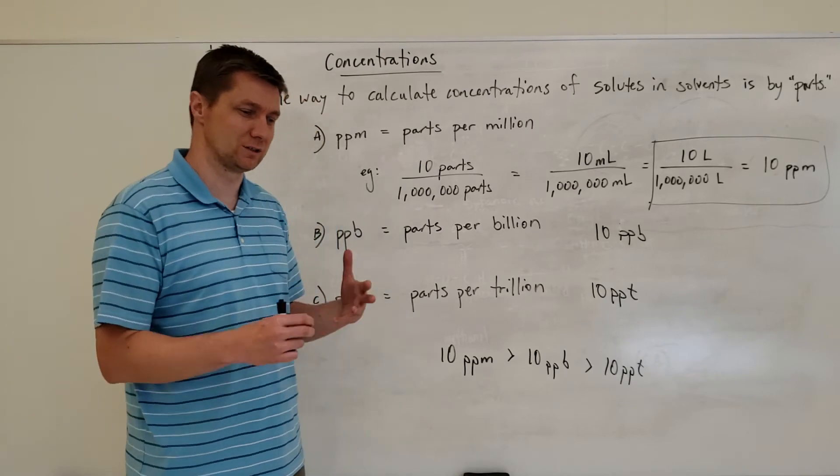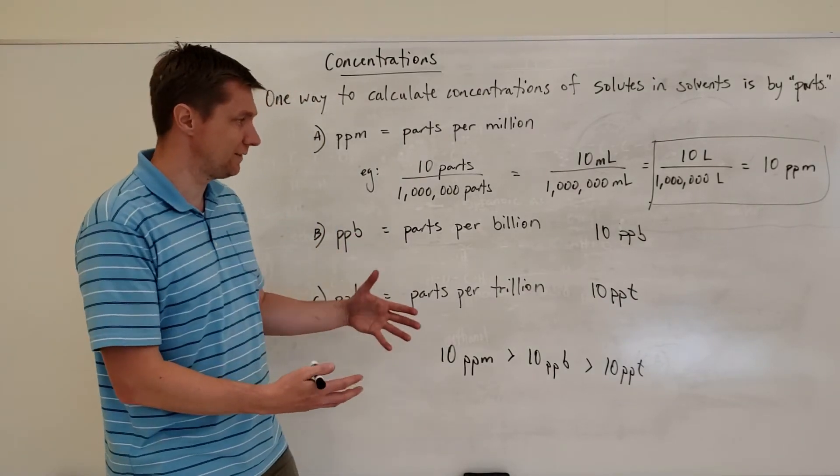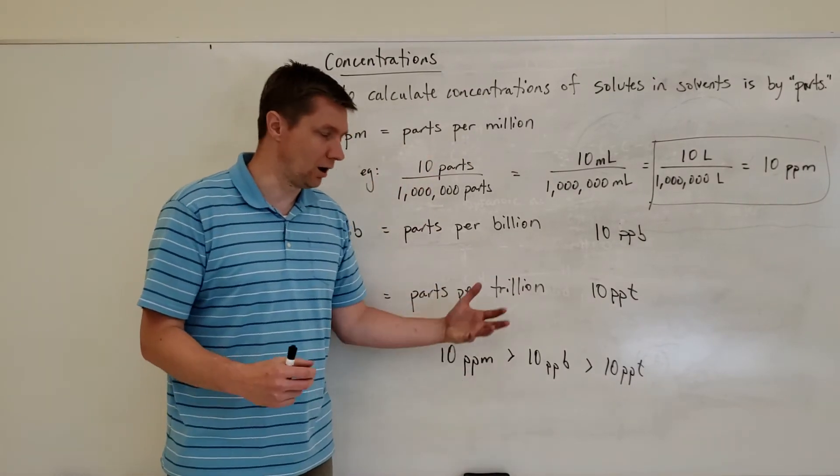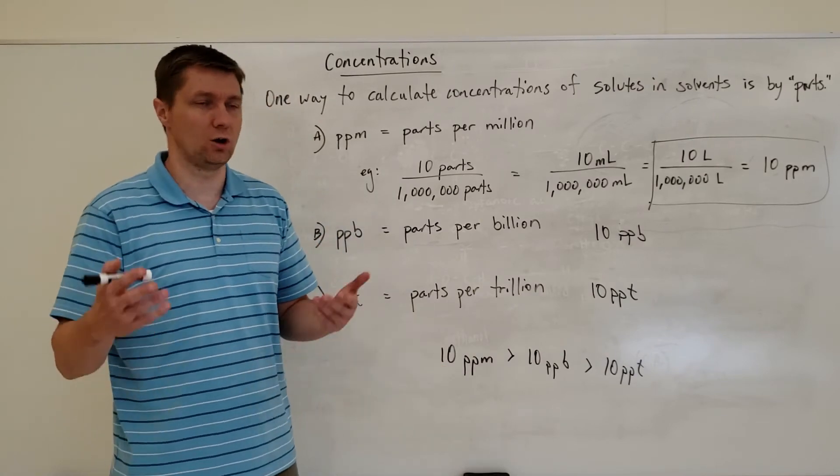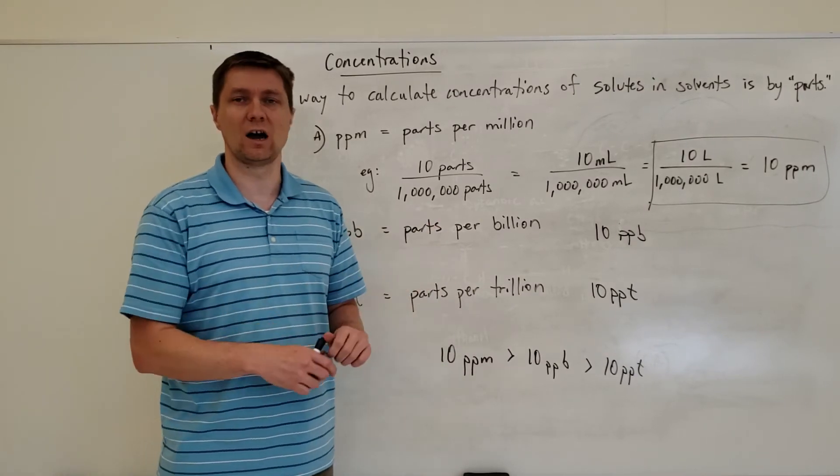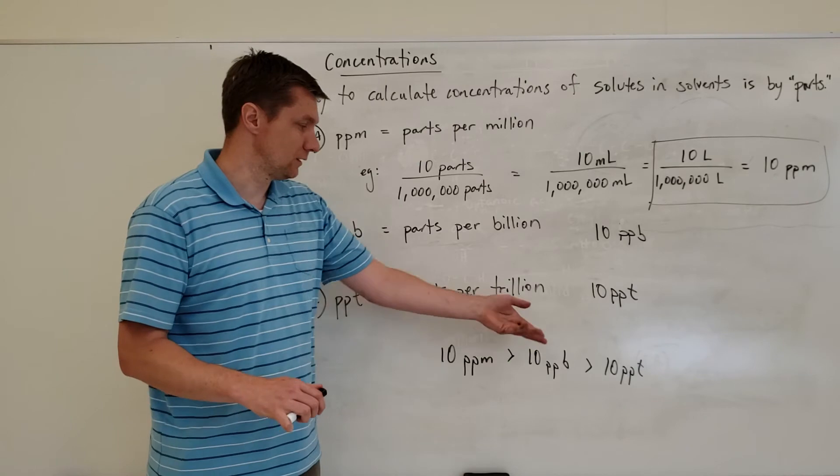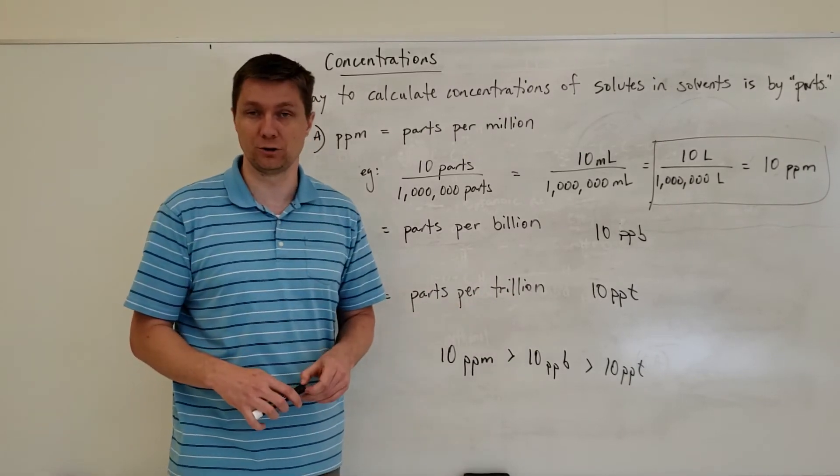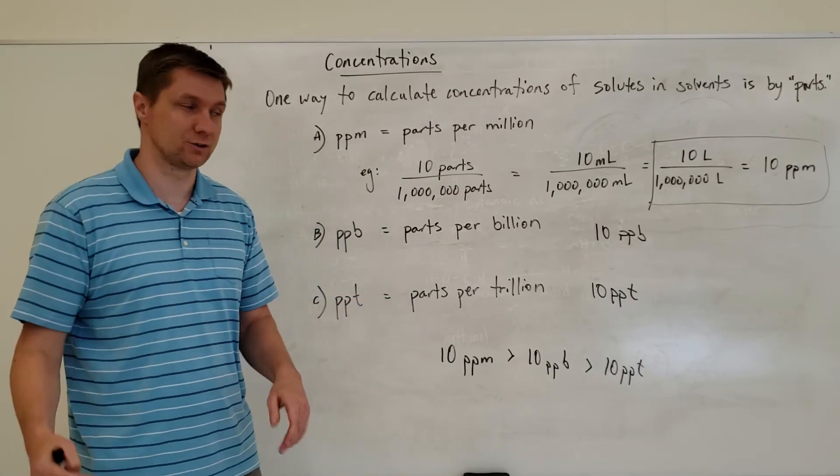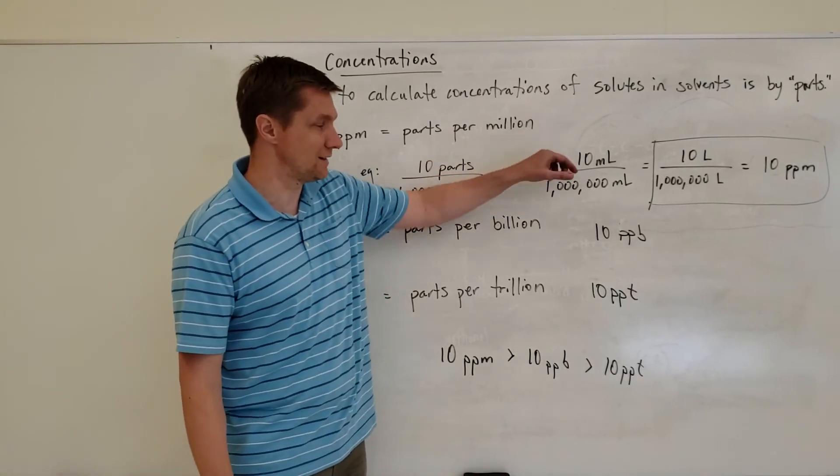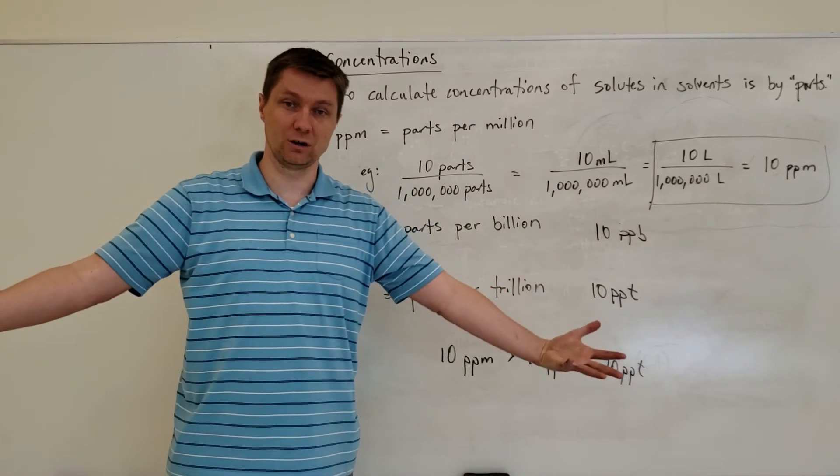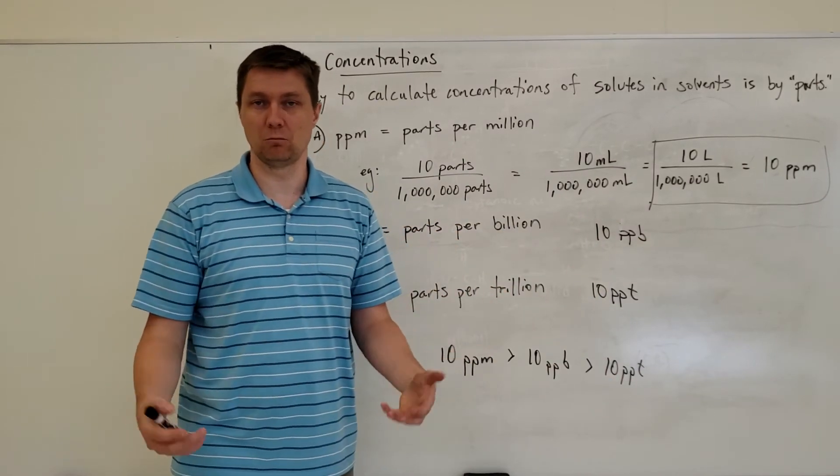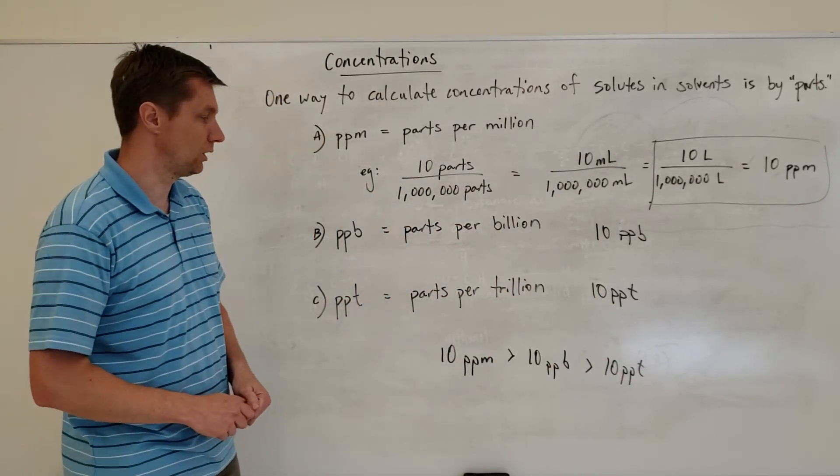So it's kind of a tricky concept because if you don't understand that, then oftentimes what kids will do is they'll say oh a question will say what's the highest concentration and kids will say okay well trillions the biggest number so I'm going with ten parts per trillion when in fact that's the lowest concentration because we're dissolving that ten in a trillion parts not just a million parts which is gonna make it more concentrated.